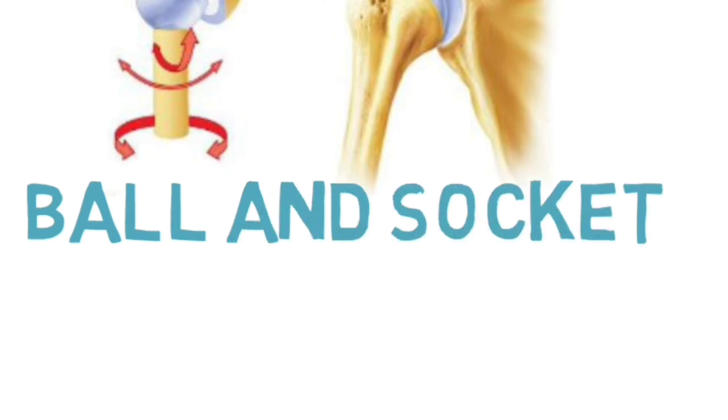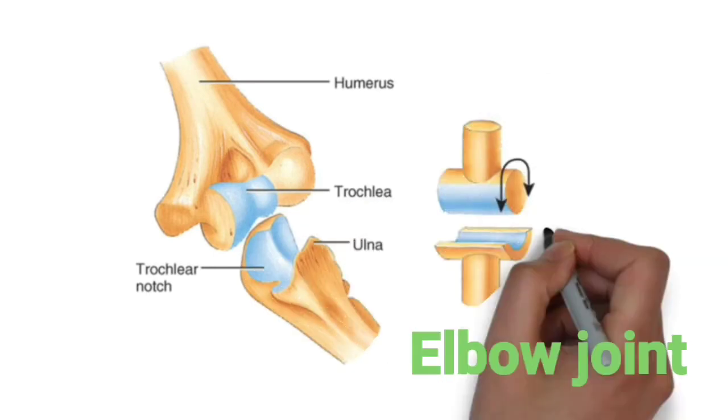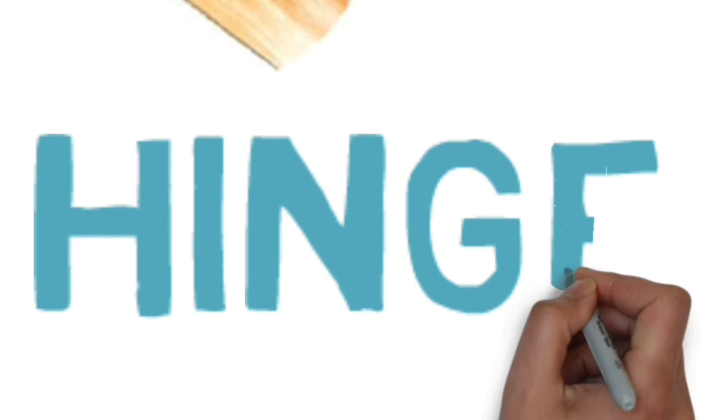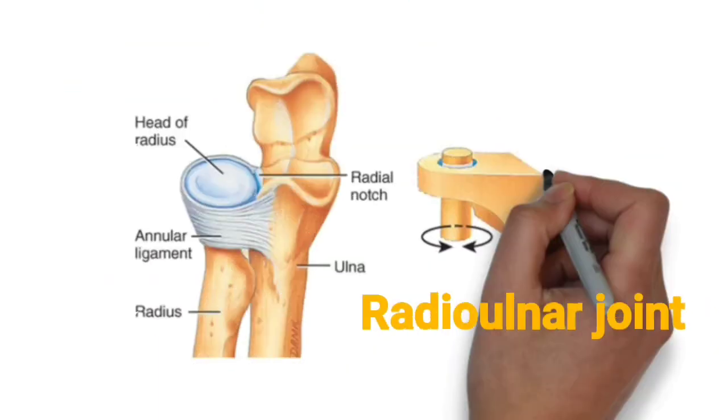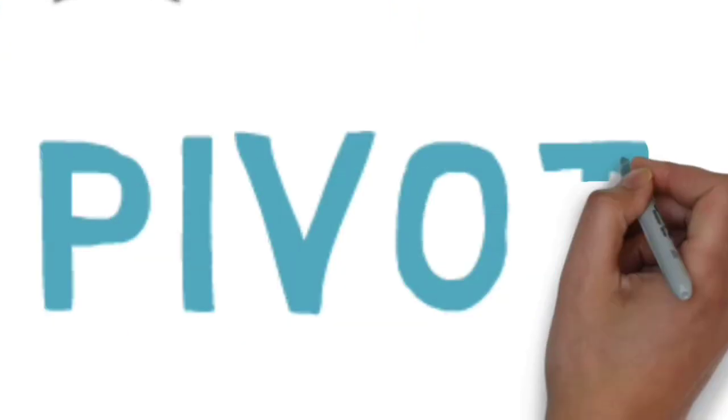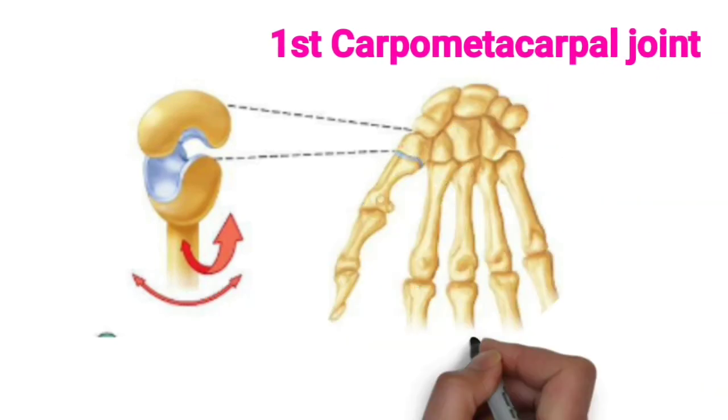The elbow joint is an example of the hinge variety of synovial joint. The superior and inferior radioulnar joints are examples of the pivot variety. The first carpometacarpal joint, or thumb, is an example of the saddle variety.